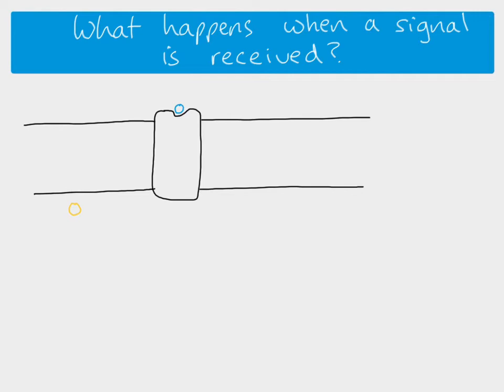When the signaling molecule binds to the receptor, it triggers changes inside the cell. The first thing that happens is that the receptor molecule will change shape in some way, and that change in shape will then trigger the activation of a G-protein.